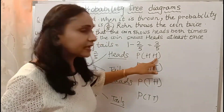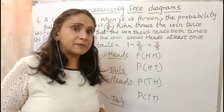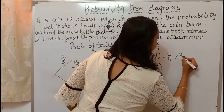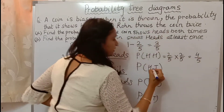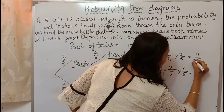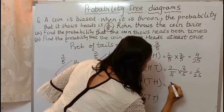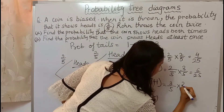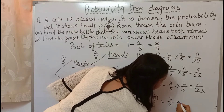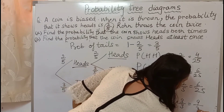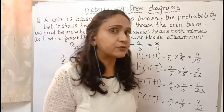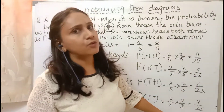Here we have heads and heads, heads and tails — that means we multiply. The probability of heads and heads is 2 by 5 times 2 by 5, which is 4 by 25. Heads and tails: 2 by 5 times 3 by 5 = 6 by 25. Tails and heads: 3 by 5 times 2 by 5 = 6 by 25. Tails and tails: 3 by 5 times 3 by 5 = 9 by 25. When you add all these probabilities you get 1, because the sum of all probabilities is always 1.